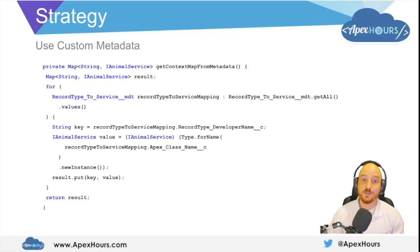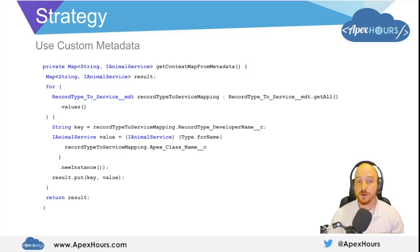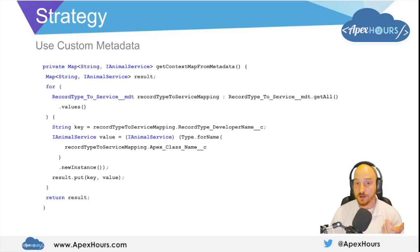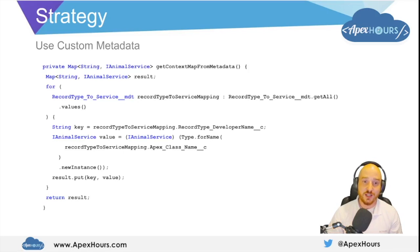This enables us to extend our application's functionality without modifying any Apex that we've historically delivered. We just introduce a new Apex class which implements the interface defined for the strategy — in this case, the IAnimalService interface — and then create a new row within custom metadata that stores the mapping of the context, i.e., the record type developer name, to the Apex class name for that implementation. This allows us to extend our application without modification of it, adhering to the open-close principle.